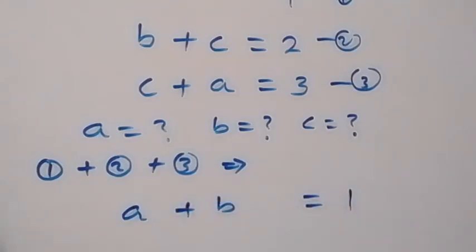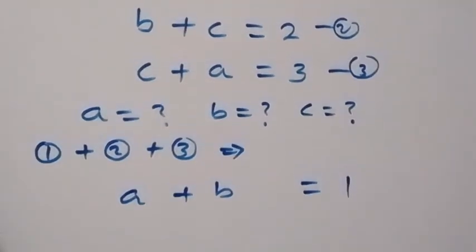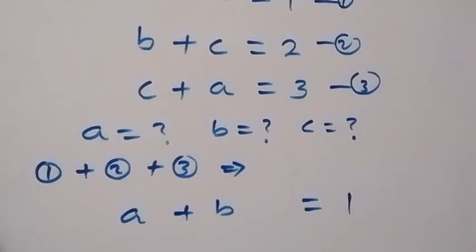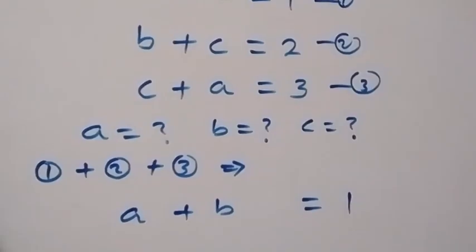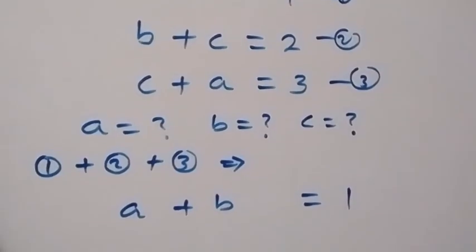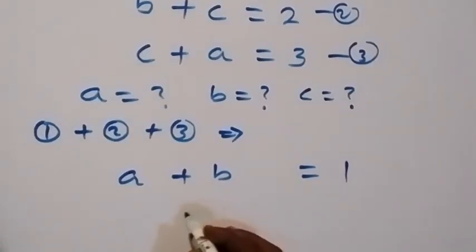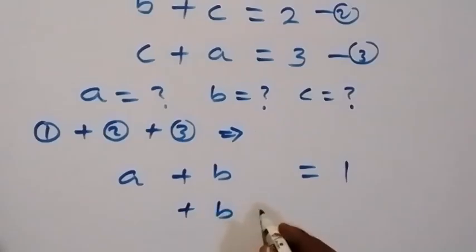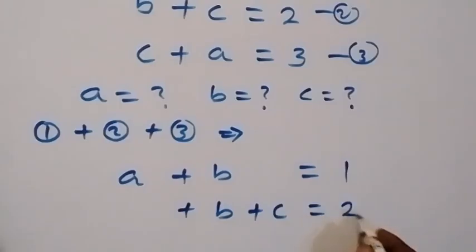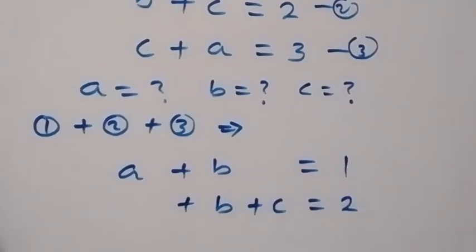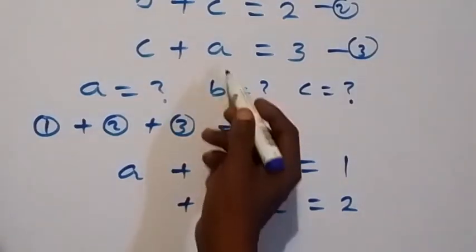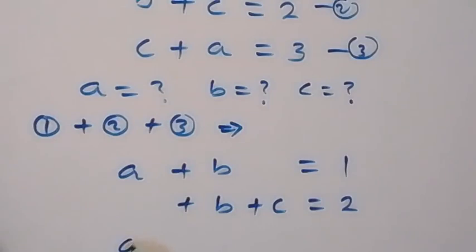Then, from equation 2, we have b plus c equals to 2. So let's put the corresponding letters under each other. For here, b plus b now, then plus c. Here c, we don't have it and equals to 2 here. Then equation 3, we have c plus a equals to 3. That is a, we have a here. Then plus no b, then we have c, then equals to 3.